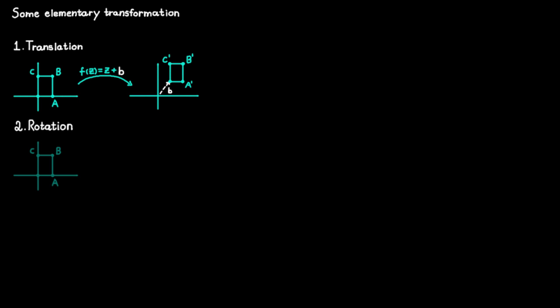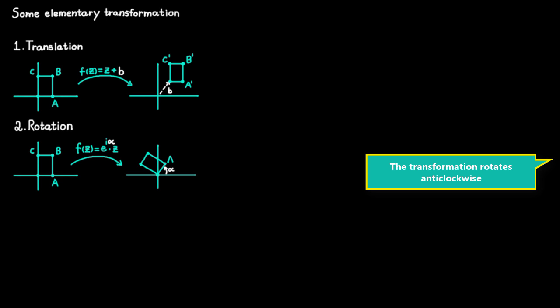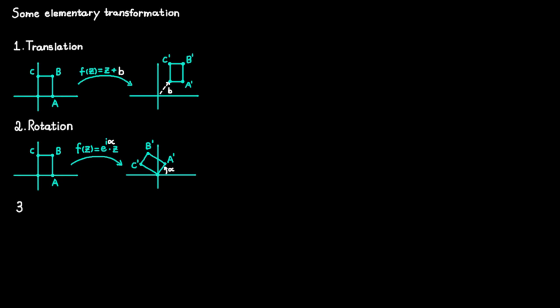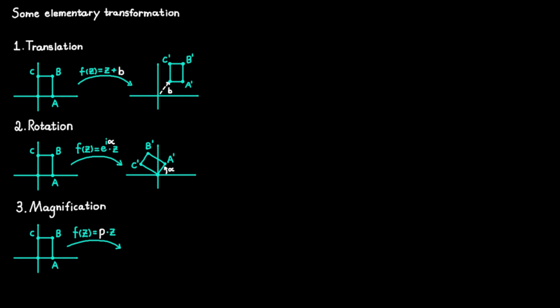Rotation is the next transformation. It is simply the act of rotating every point of a figure around the origin. The function that does this can be defined as the following, where the amount we are rotating by is determined by the angle alpha. The third transformation is called magnification. This transformation simply enlarges or contracts the distance of every point from the origin by the same factor. For example, this function here enlarges the figure by the factor 2. Note also that the distance between any two points is multiplied by the same factor.